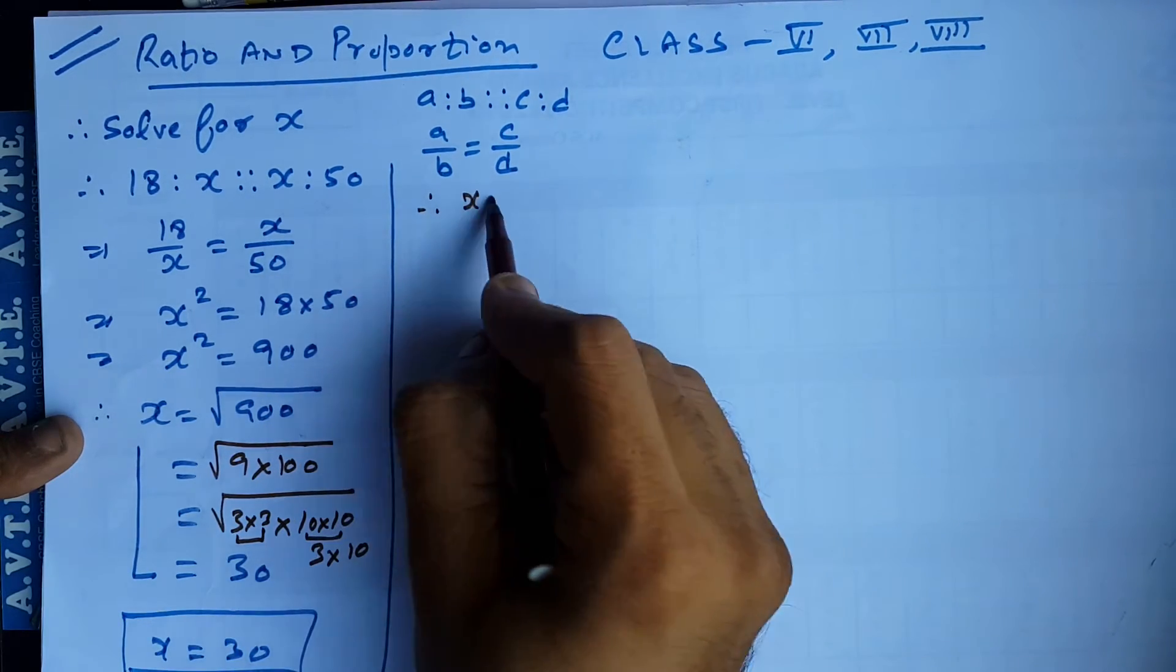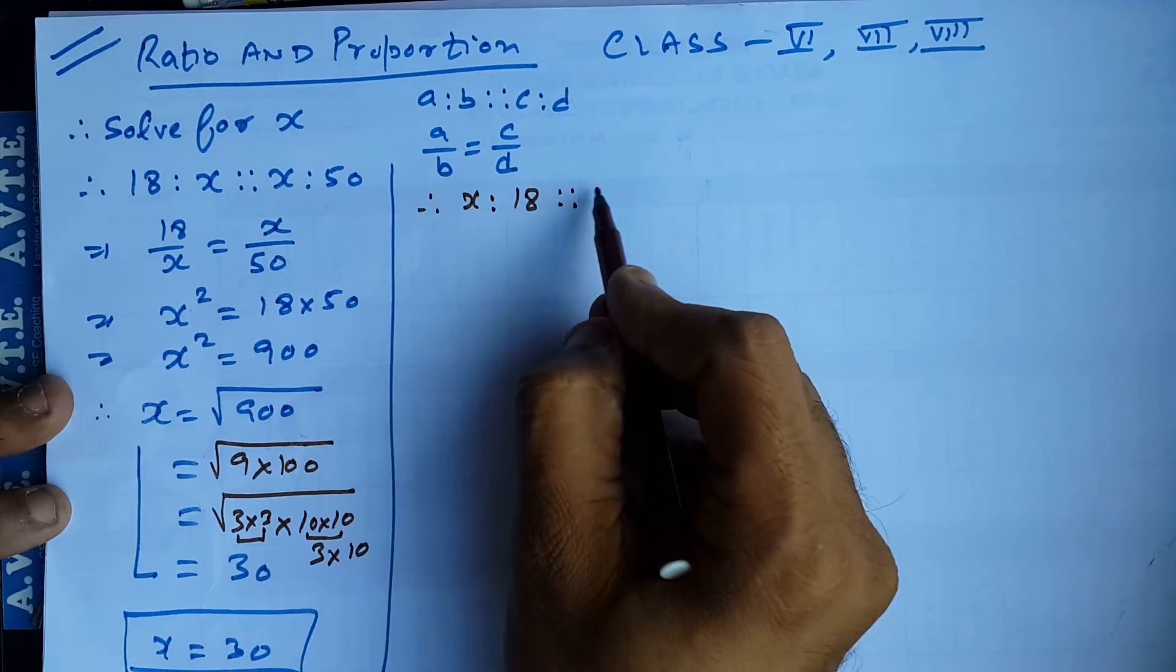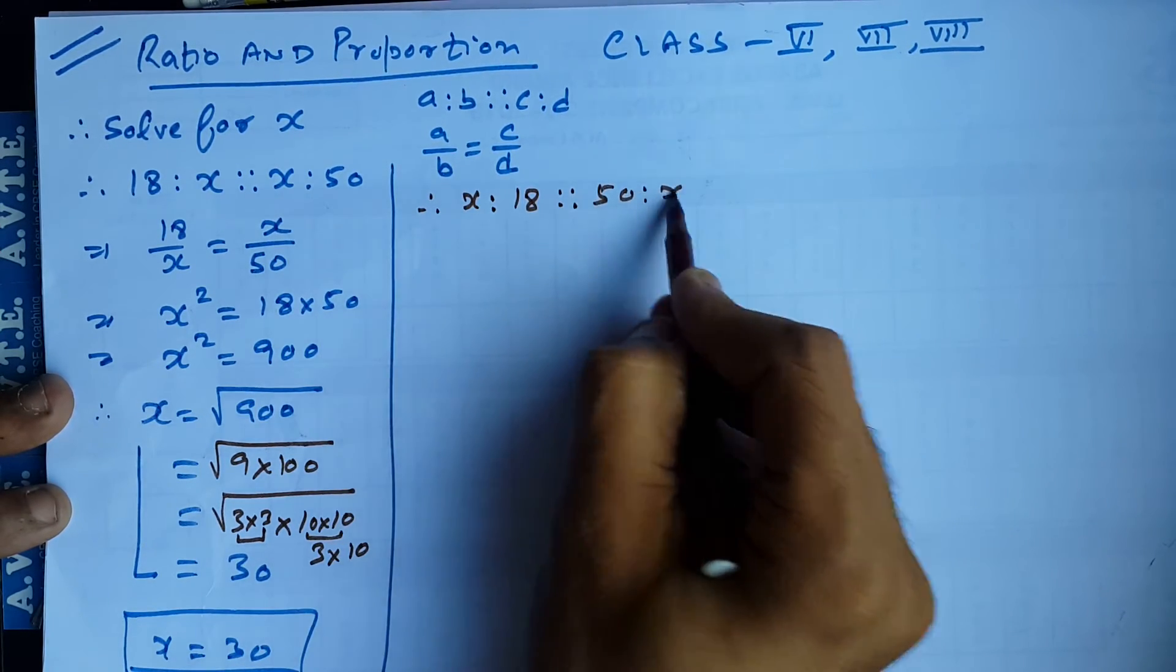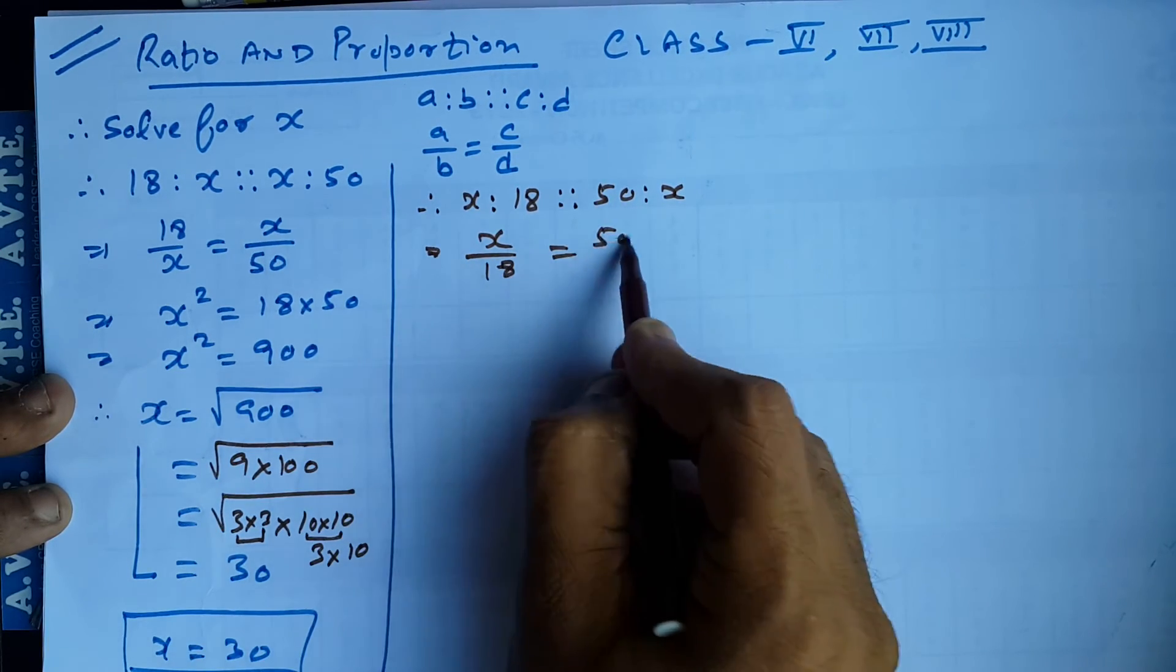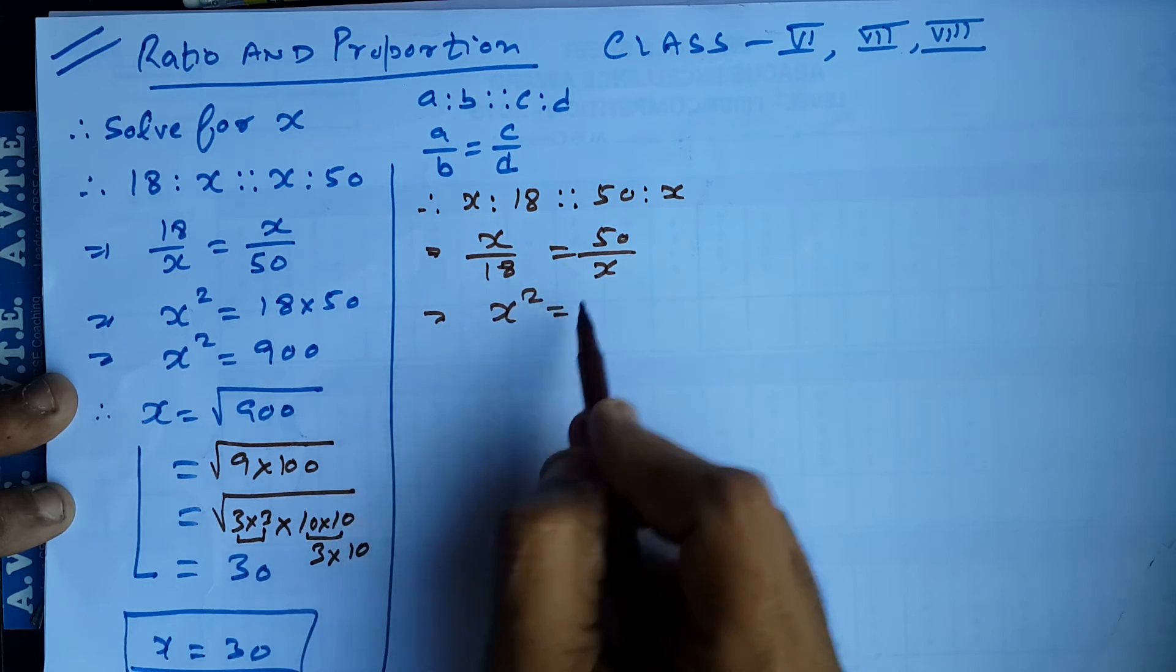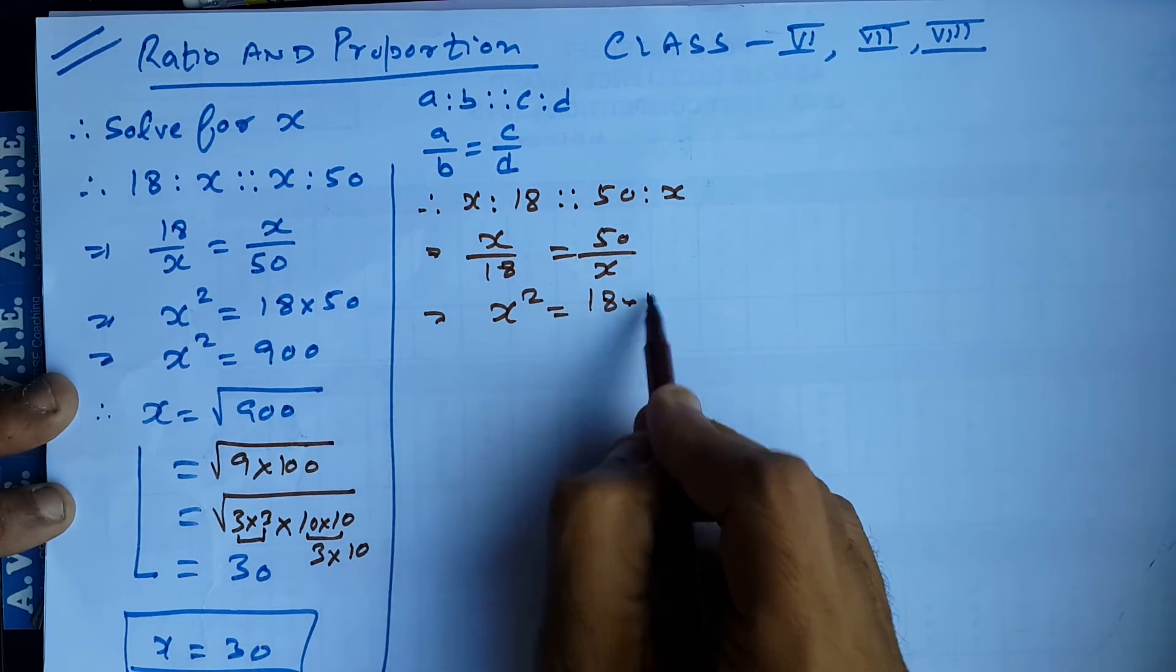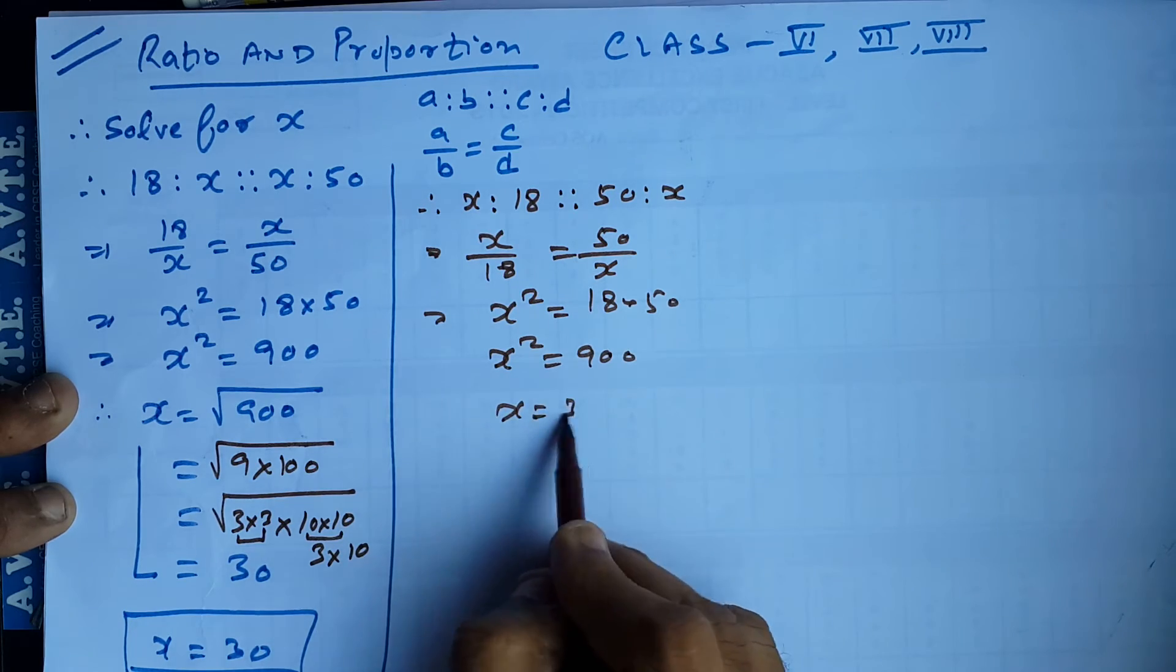The same question we can take it in this style also. So x is to 18 is to 50 is to x. So this is x upon 18 is equal to 50 upon x. Then same x into x is x squared and 18 into 50 is 900. Same logic, x is what? 30.